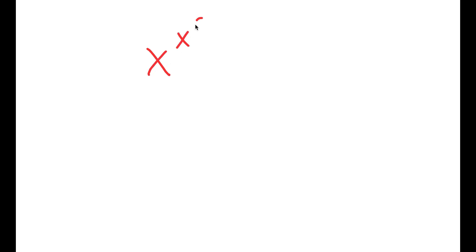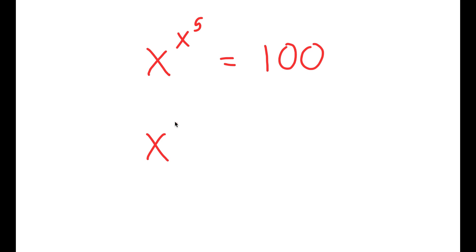In this video I'm going to solve the equation x to the power of x to the power of 5 is equal to 100. To solve this equation I'm going to first start by taking the power of 5 on both sides.